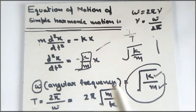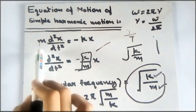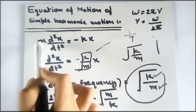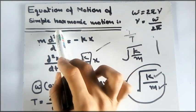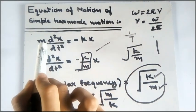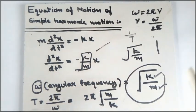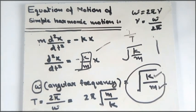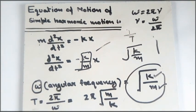Always remember: whenever you find an equation where the double derivative of a quantity equals that quantity multiplied by a constant — it need not always be m or k, it could be anything — that equation represents simple harmonic motion. Take the constant, find its square root, and that gives the angular frequency ω of that system. To find the time period, simply compute T = 2π/ω. This is what you need to write in exams when asked to derive the equation of motion of simple harmonic motion.